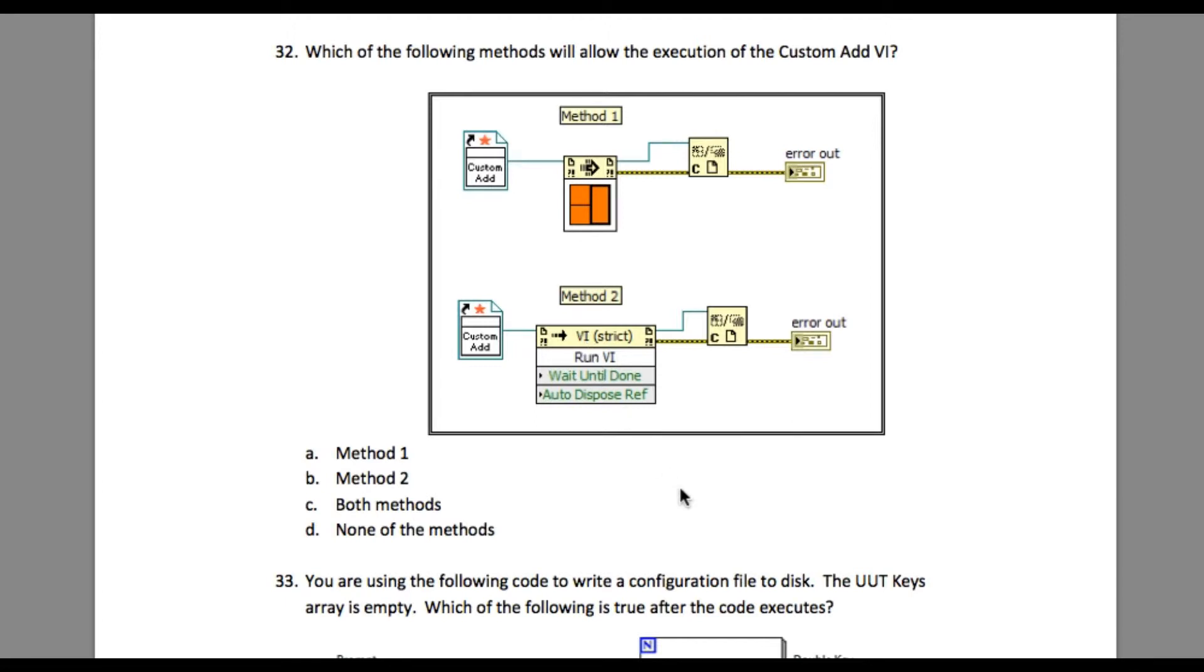If you look into the two different alternatives, the first one is using the Run VI using reference, and the second one is using the method node. Notice the reference on the left-hand side.